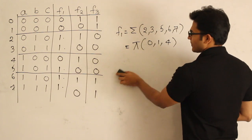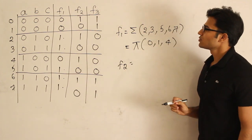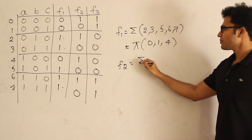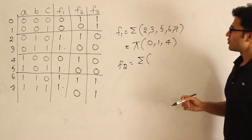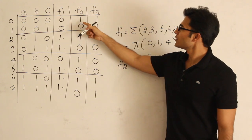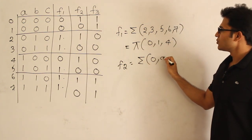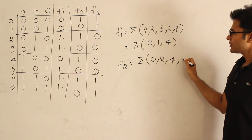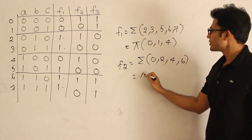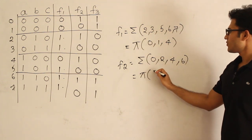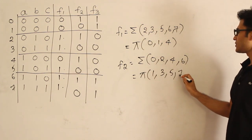Now let's practice f2. f2 can be written as sigma — sum of products. What are the minterms? They are 0, 2, 4, 6. And the product of sums is pi(1, 3, 5, 7).